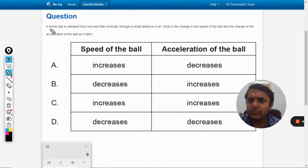A tennis ball is released from rest and falls vertically through a small distance in air. What is the change in the speed of the ball and the change in the acceleration of the ball?